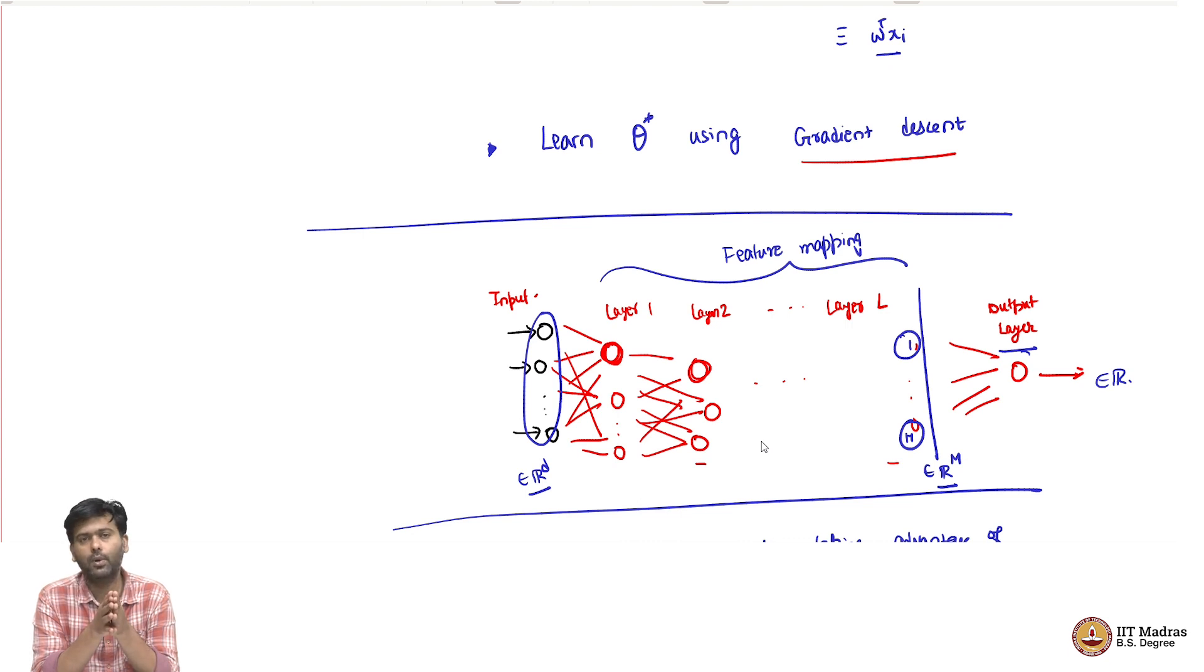We started with the problem of unsupervised learning. There are three different major types of unsupervised learning. One was representation learning for which we saw PCA and kernel PCA. Then we looked at clustering for which we saw the k-means algorithm, and I said you can also extend k-means to a kernel version called spectral clustering. Then we looked at estimation as part of unsupervised learning where we looked at maximum likelihood, Bayesian methods, and mixture models, specifically focusing on the EM algorithm.